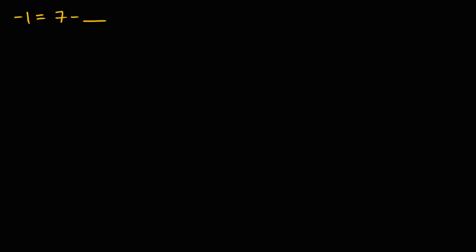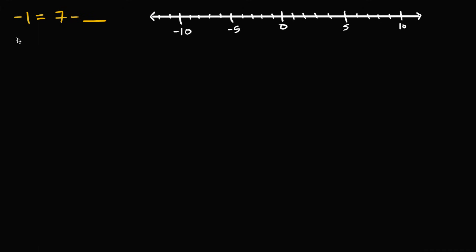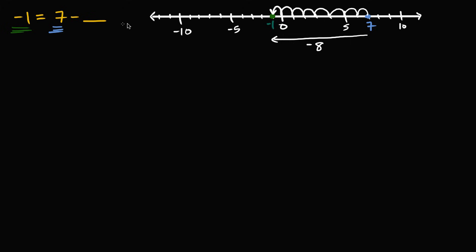Let me put a number line right over here and let's think about what's going on. We are trying to get to negative one, and we are starting at seven. So what do we have to subtract from seven to get to negative one? Well, we have to move eight steps to the left. So what we just did is we subtracted eight from seven to get to negative one. We need to subtract eight.